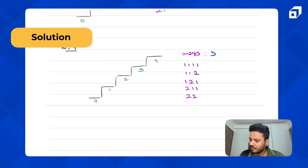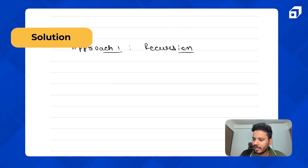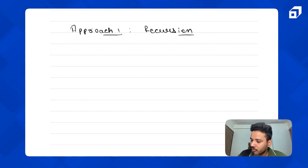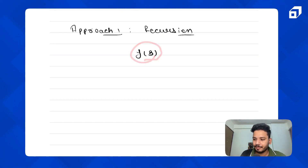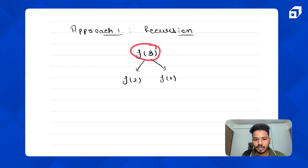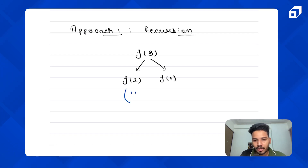Now let's discuss the solution. The recursive one is not hard — this is the basic question we do in dynamic programming learning. If I want to know the number of ways to reach the third step, and somebody tells me the number of ways to reach the second step and the first step, I can directly calculate the answer. Number of ways to reach the second step is two; the first step is one.